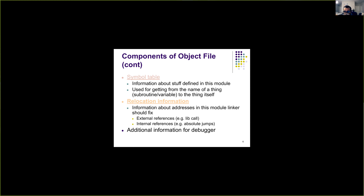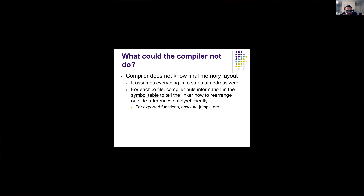We'll look at relocation information later with an example. The object file can also contain additional information needed for the debugger — for instance, gdb uses debug information to display more fine-grained information. As for what the compiler does not do: the compiler doesn't know the final layout of the memory, because an object file could be part of various executables or there could be many object files forming one executable.